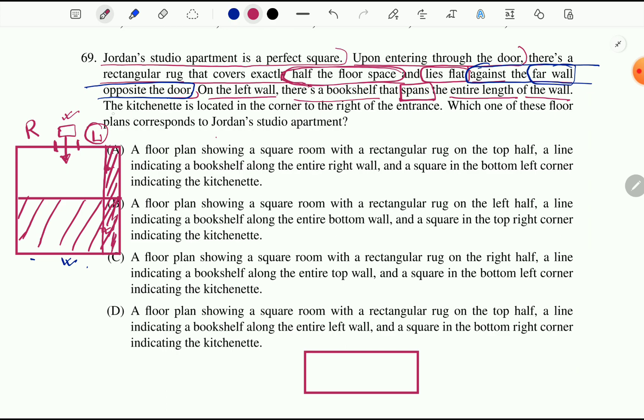In the last sentence the kitchenette is located in the corner to the right of the entrance. So this is the right side and kitchenette means kitchen is located in the corner of the right of the entrance. Therefore it's simple to understand here. So this is our kitchen. Kitchen, rug, and bookshelf. Here is the bookshelf.